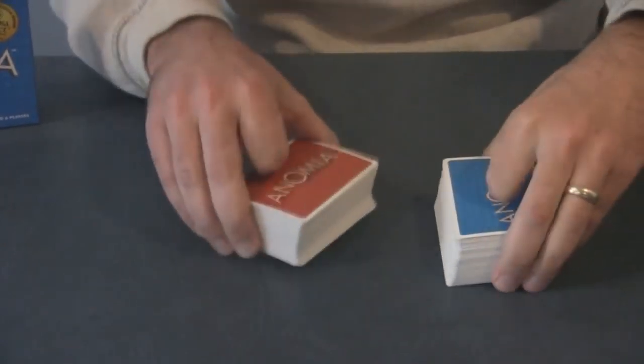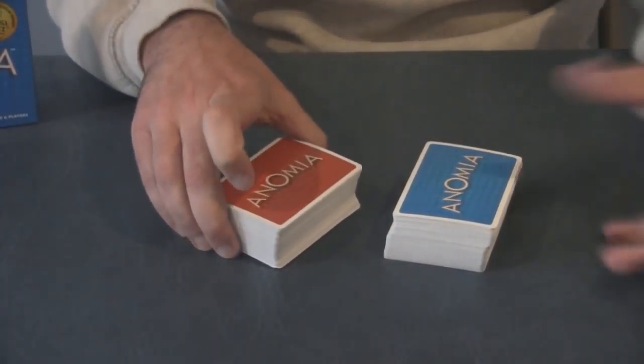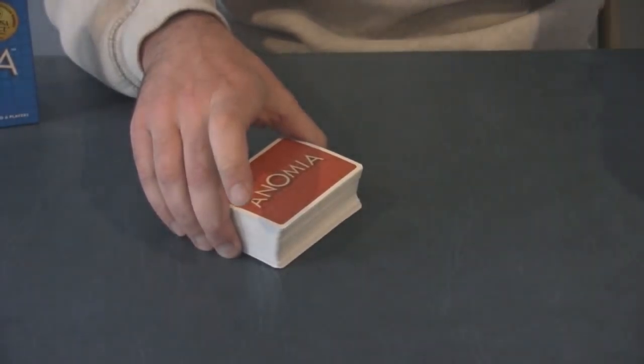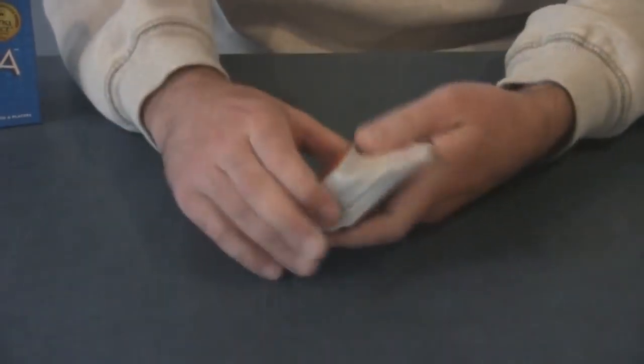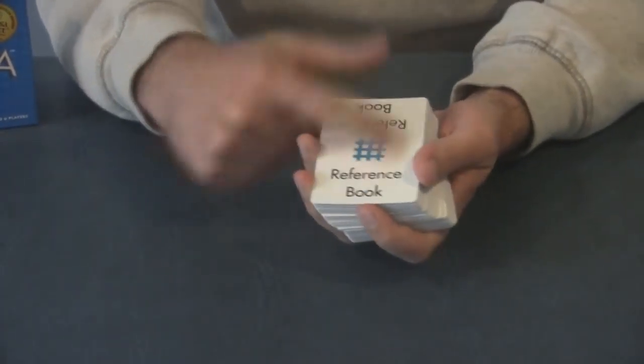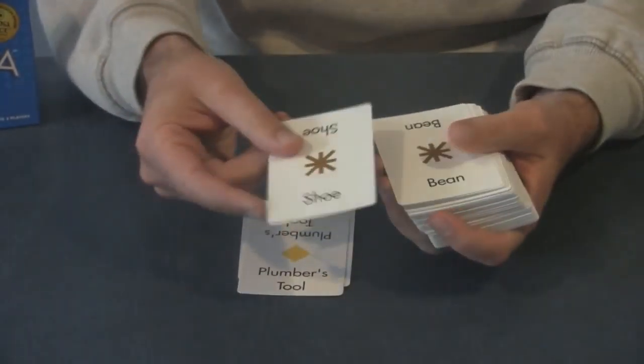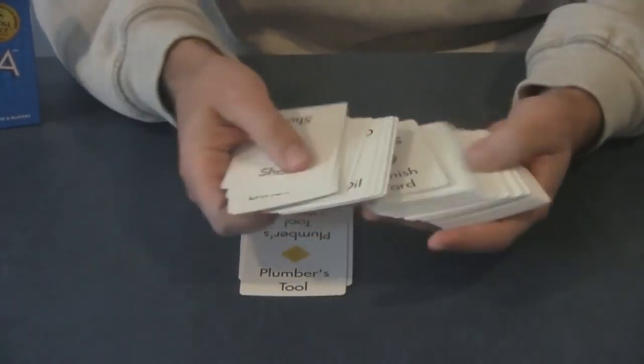It comes with actually two decks, a red deck and a blue deck, and you choose which one you want to play with. You want to play with the red deck? Yes, I suppose. Okay, Brooke, that's great. So on the cards you have a symbol and words. This says reference book, obviously. First name, plumber's tool, shoe, bean, all sorts of different things.